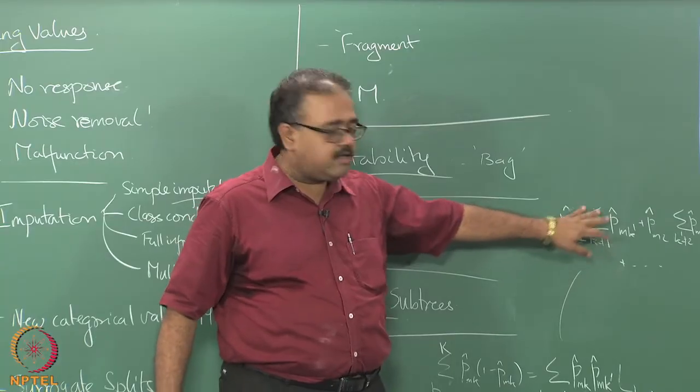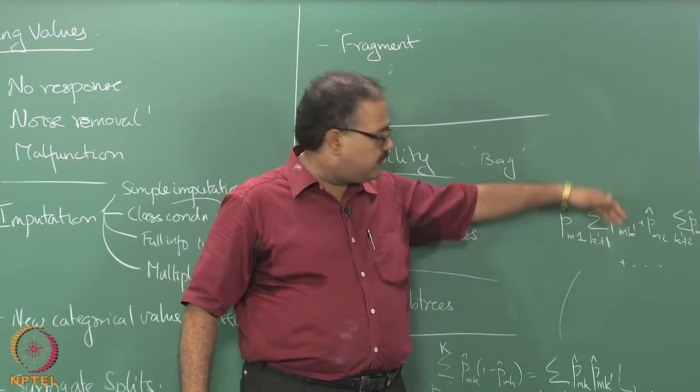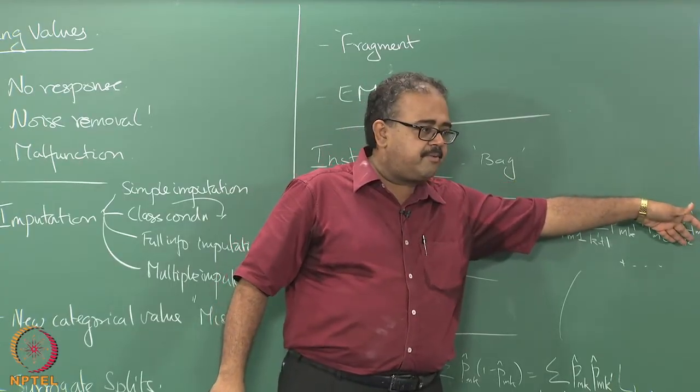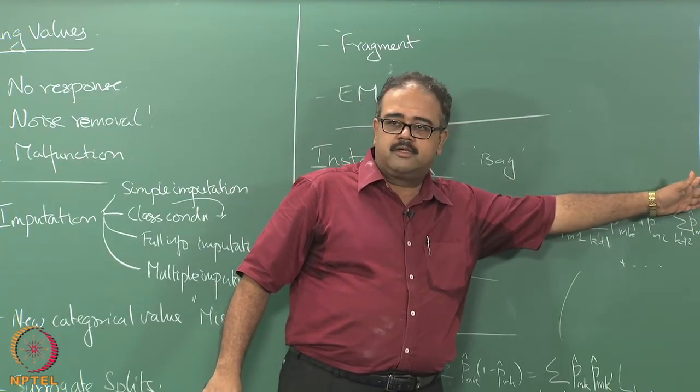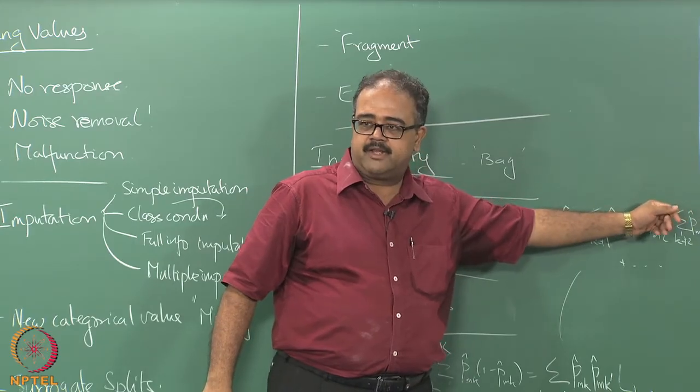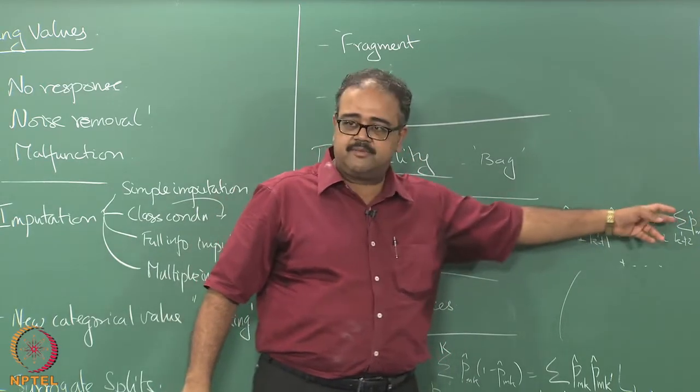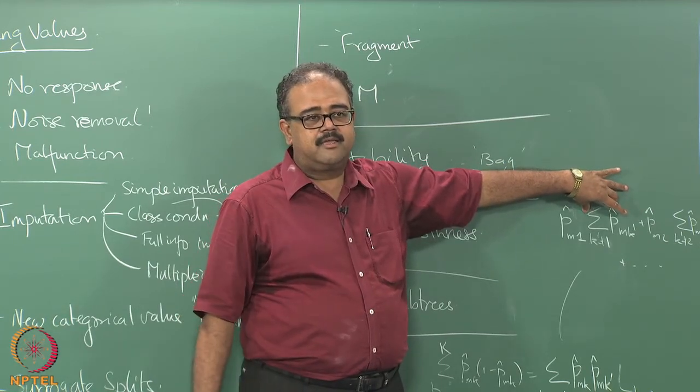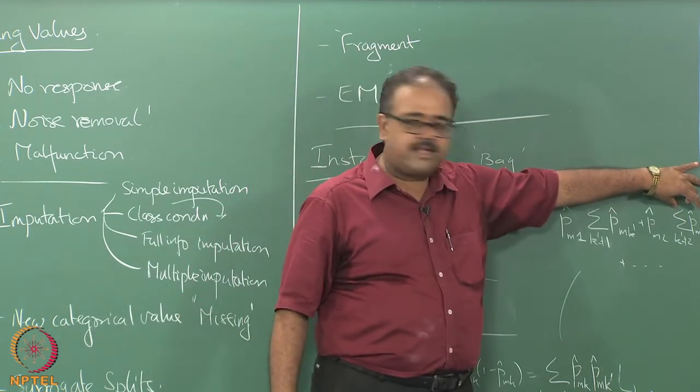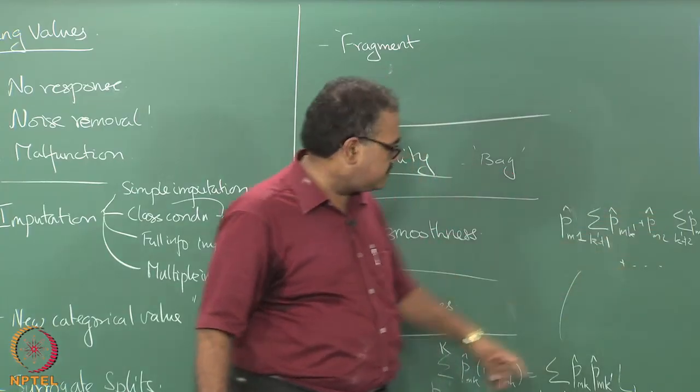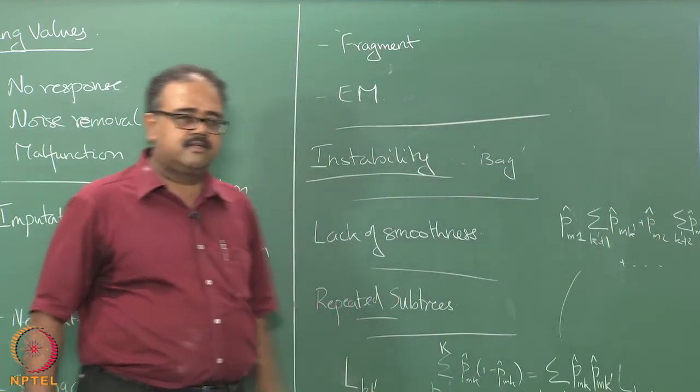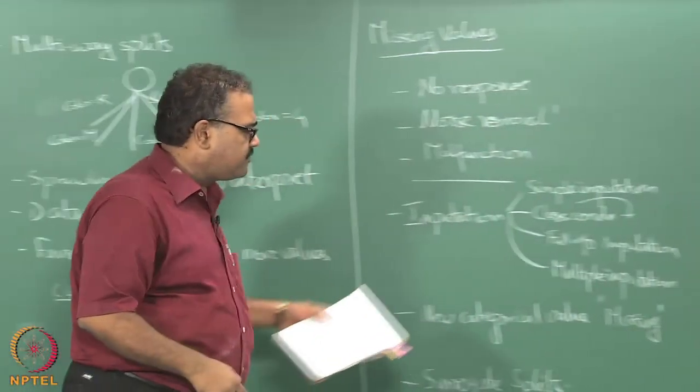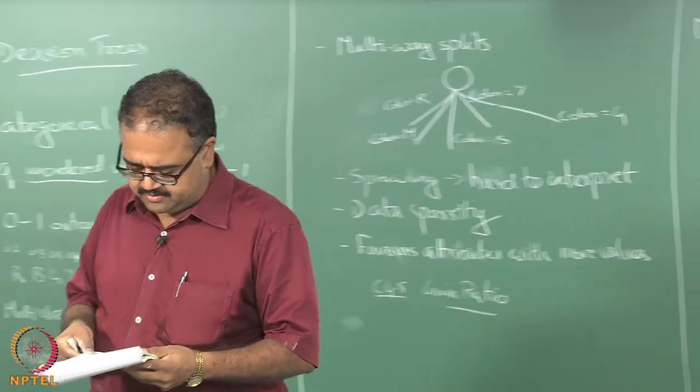That is P̂_m1 times summation k' not equal to 1 P̂_mk', plus P̂_m2 times summation k' not equal to 2 P̂_mk'. I will get k such terms, and this summation is essentially 1 minus P̂_m1, and this summation is 1 minus P̂_m2. That is essentially what I get here. Like that you have to work it out for everything. If you have a different loss function.